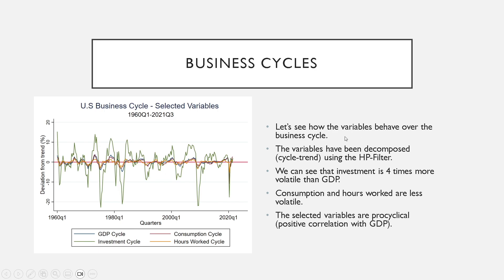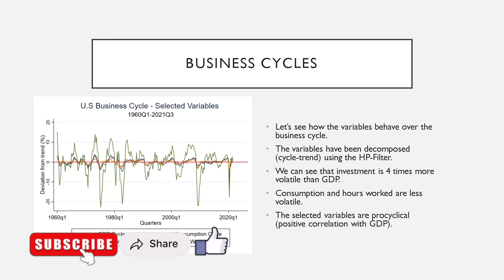We can see how variables behave over the business cycle. GDP, investment, consumption, and hours worked have all been decomposed into cycle and trend using the HP filter. We can see that investment is about four times more volatile than GDP. This is a property of business cycles — a stylized fact — something that we should find in the data.